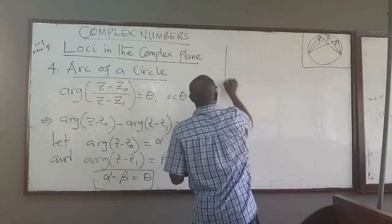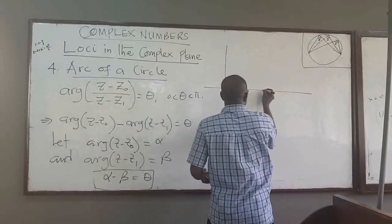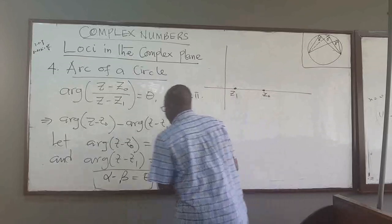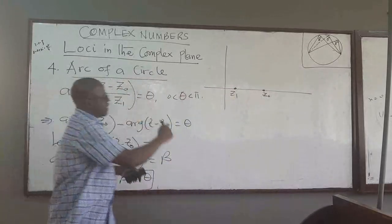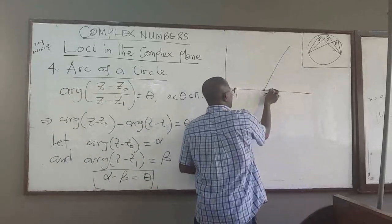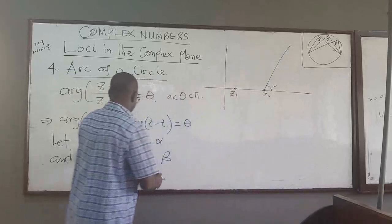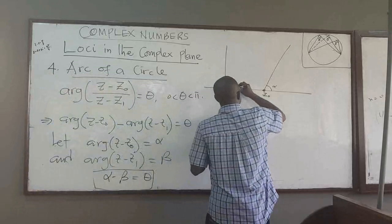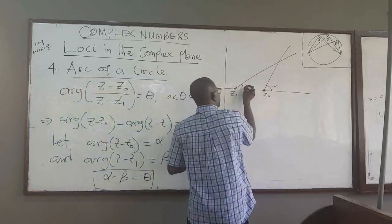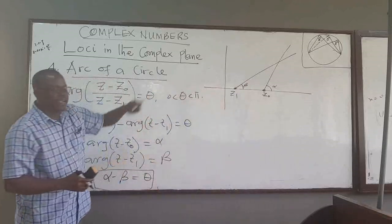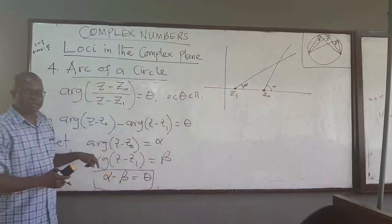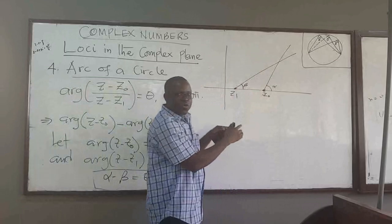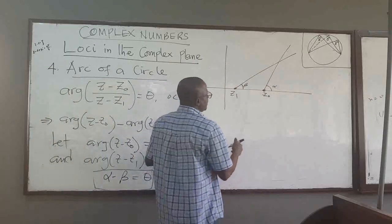This is a half line. Suppose z0 is here and z1 is there. This is a half line making an angle of alpha with the positive axis, and this other half line from the point z1 makes an angle of beta. Since theta is positive, alpha is strictly greater than beta, so they are not parallel — they have to intersect at some point. So they intersect here, and we call that point gamma.